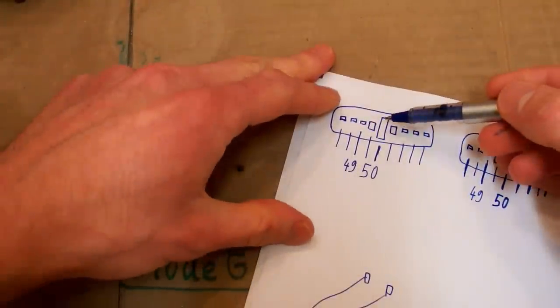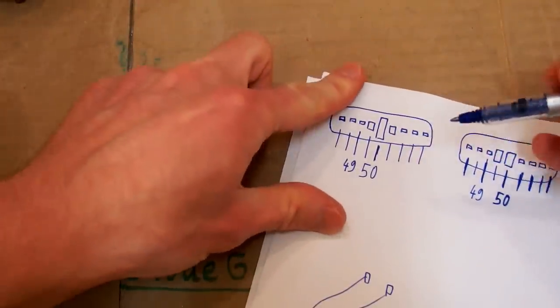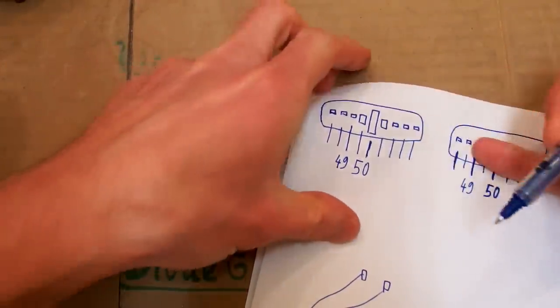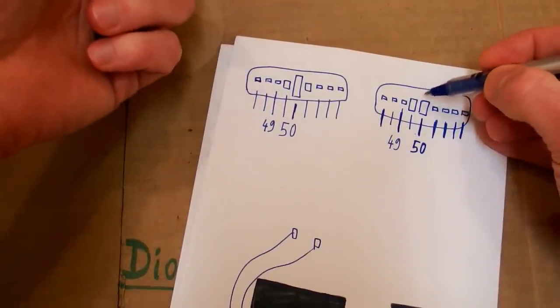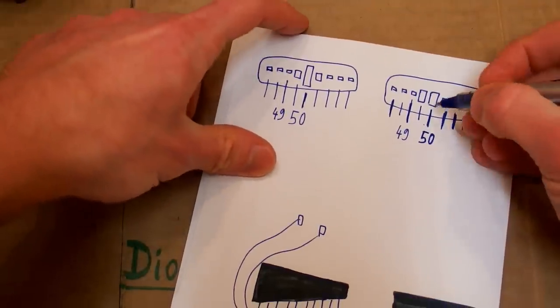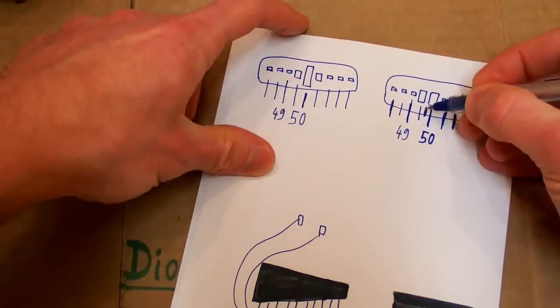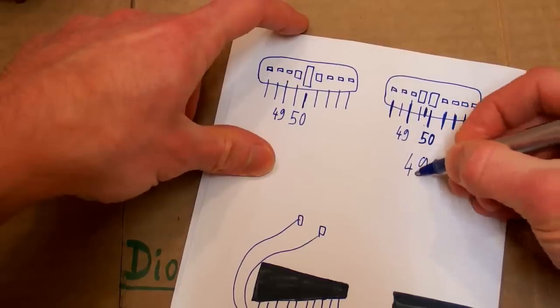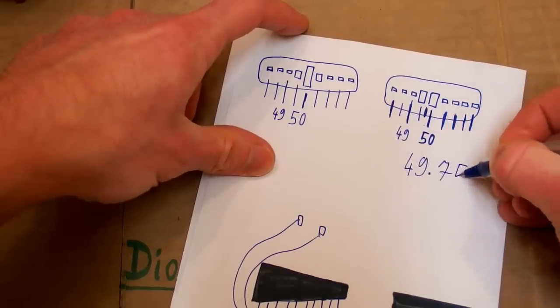In operation it looks like this. For example when it's 50 hertz it looks like this and if the frequency is in between two you can see something like this. So this is actually somewhere here which means 49.75 hertz.